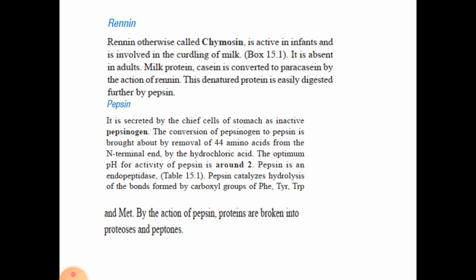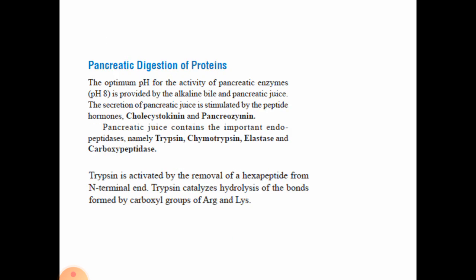The first gastric enzyme is rennin, also called chymosin, active in infants for digestion of milk. Milk casein is converted to paracasein by rennin, and this denatured protein is then easily digested by pepsin. Pepsin is secreted by the chief cells of the stomach; its inactive form is pepsinogen. Conversion of pepsinogen to pepsin involves removal of 44 amino acids from the terminal end. Optimum pH for pepsin activity is around 2, and pepsin is an endopeptidase that catalyzes hydrolysis of bonds formed by phenylalanine, tyrosine, tryptophan, and methionine, breaking proteins into proteoses and peptides.